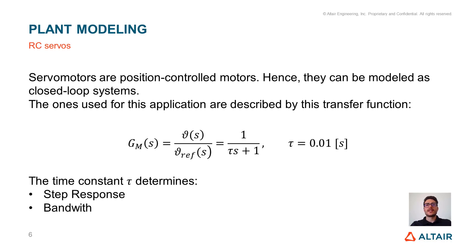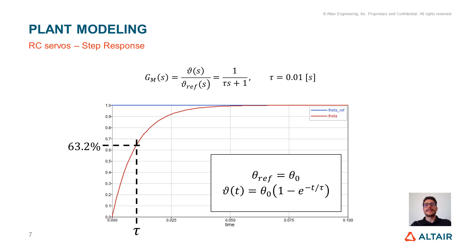Let's start with actuators. The servo motors are position control motors. Hence, they can be modeled as closed-loop systems whose input is the reference angle and whose output is the actual angle reached by the motor. For our application they have been modeled with a first-order transfer function. From the transfer function we can see the time constant of the RC servos. The time constant is an important parameter for first-order systems because it defines the step response as well as the bandwidth. Looking at the step response, we can see that the time taken by the output to reach roughly 63% of the input is exactly the time constant.